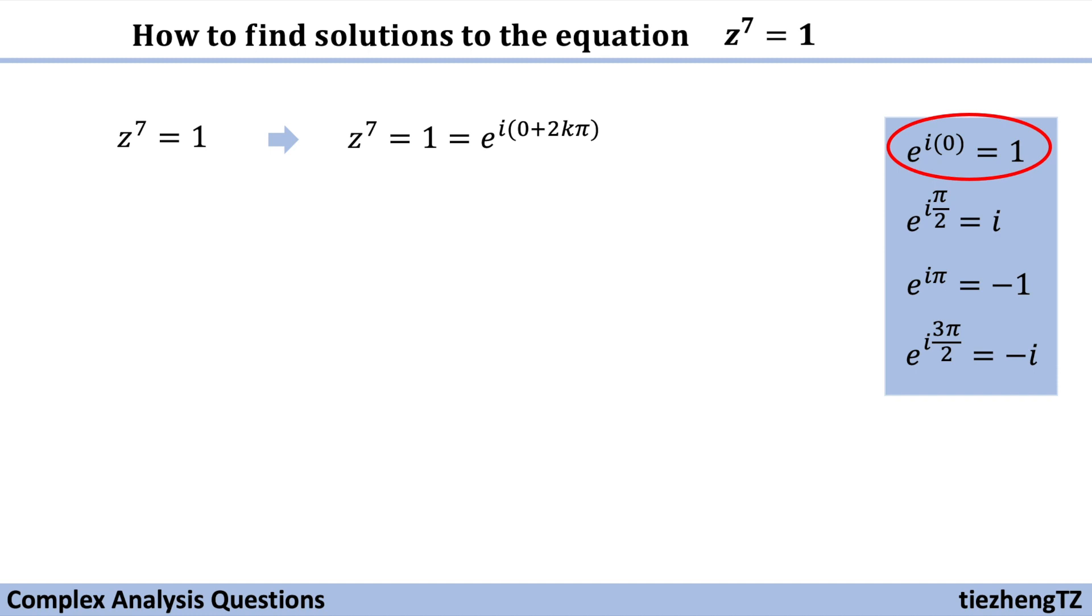Because we need to find all possible solutions, so we need to add 2k pi in the power.